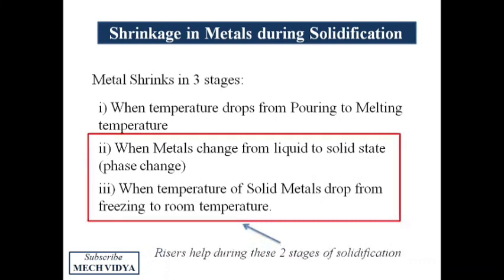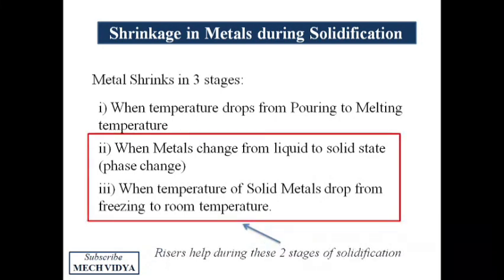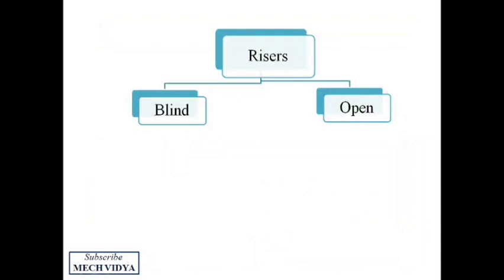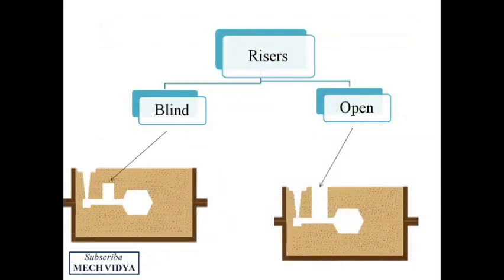So risers are of two types, blind risers and open risers. A blind riser is a riser which does not have an outlet to the atmosphere. Whereas an open riser is one which has one of its end open to the atmosphere.